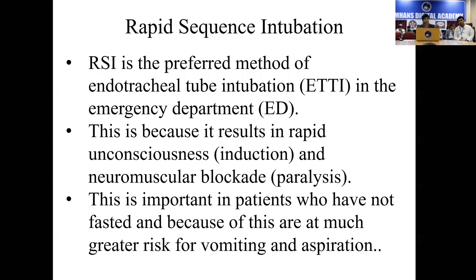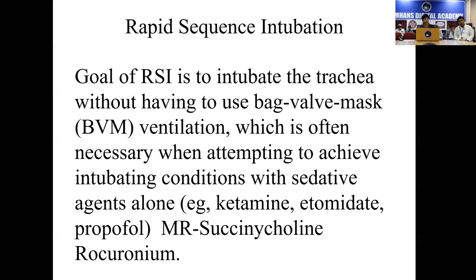Rapid sequence intubation is what is recommended, where you have an endotracheal tube with a cuff ready, and using a stilette or a bougie it has to be introduced. To do this, we have to give an induction agent which can put the patient to sleep, and use a neuromuscular relaxant to help ease the intubation of the patient. Most importantly, it should be consultants who have the privileges and expertise to be attempting intubation in such high-risk patients.